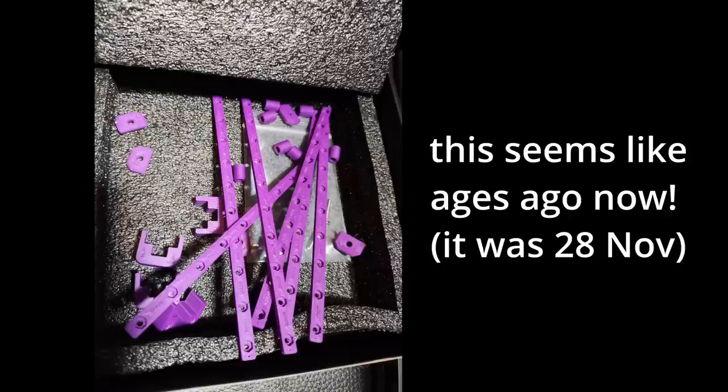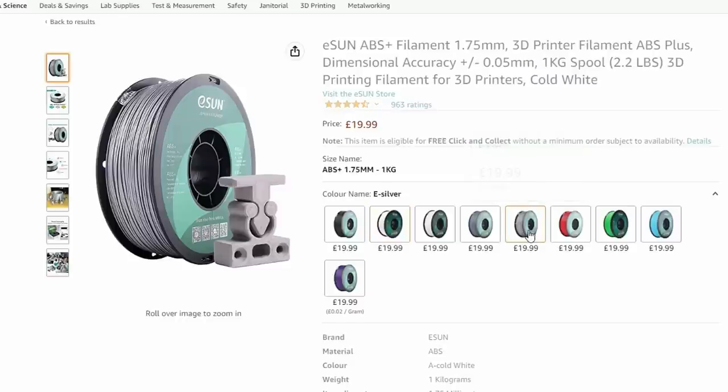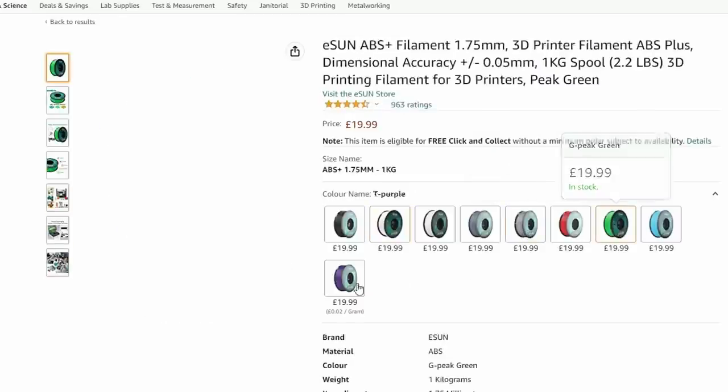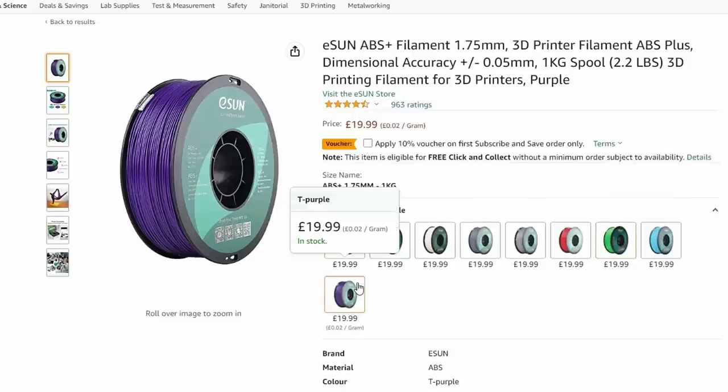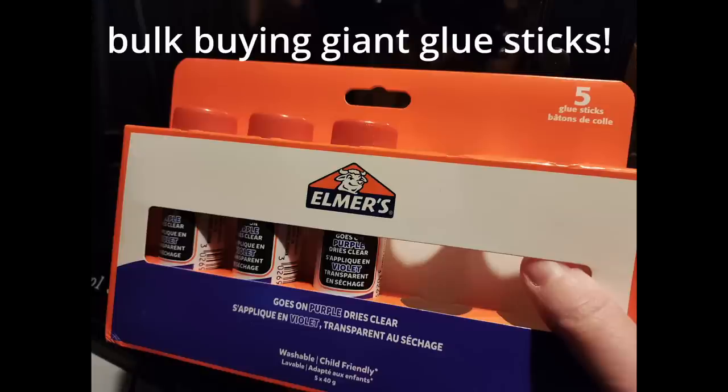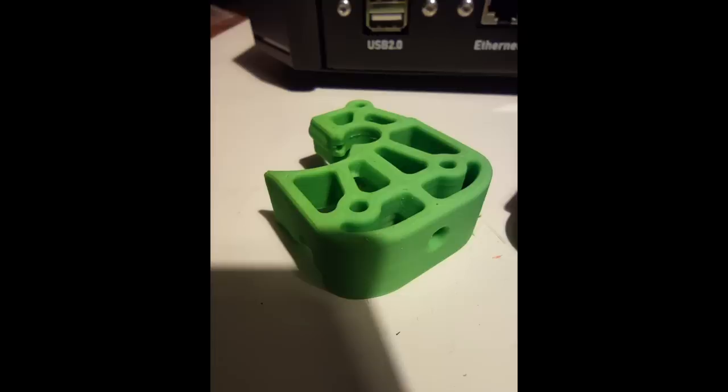And I got these two reels of ABS from eSun, which a lot of people have used. The eSun ABS Plus, I didn't want to rock the boat, so I just bought it. I decided to also use glue stick on the PEI bed and that actually turned out to be a decent choice because it did work really well.